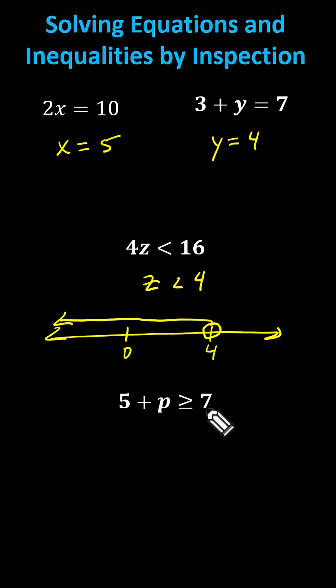But we also want the values of p to make 5 plus p greater than 7, not just equal to 7. Which means as long as p is greater than or equal to 2, the inequality would be satisfied. And therefore, the solution is p greater than or equal to positive 2.